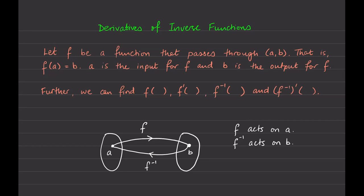So let's say we have some function f, and we know that it passes through two coordinates (a, b). So a is the input and b is the output. If we plug a into our function, the function will give us back b as the answer — f(a) = b. The a value is the input for f and b is the output for f.